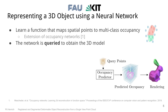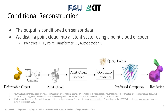Encoding a single object in 3D space alone doesn't solve the problem of reconstructing objects in a deformed state from sensor data. We need to condition the reconstruction on the sensor data. For this, we distill the sensor point cloud into a latent vector using a point cloud encoder. The occupancy predictor — our function approximator — then receives this latent vector as an additional input, allowing it to change the output depending on the observation. We tried different point cloud encoders: PointNet++, Point Transformer, and also an autodecoder architecture as defined by DeepSDF.